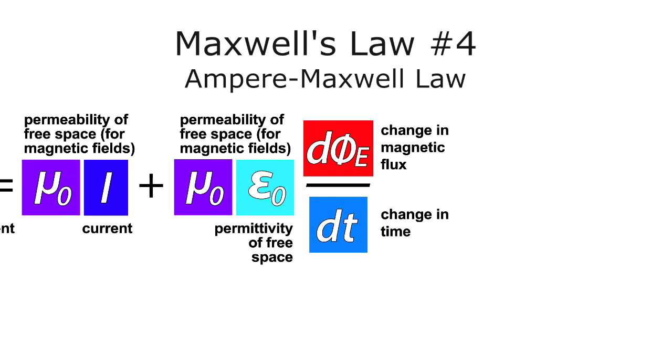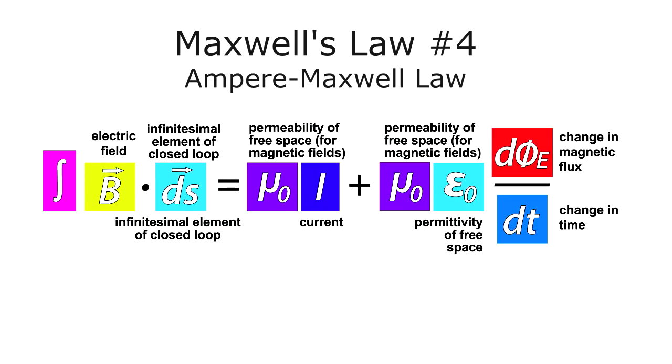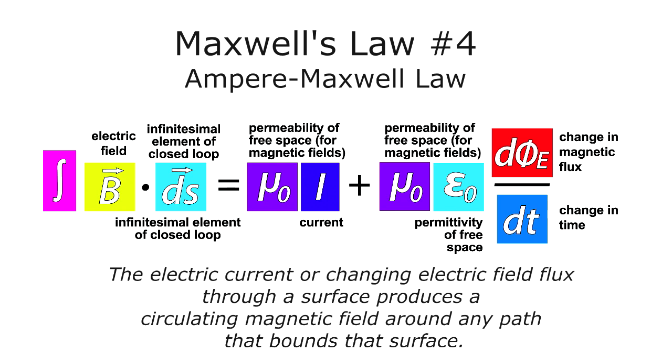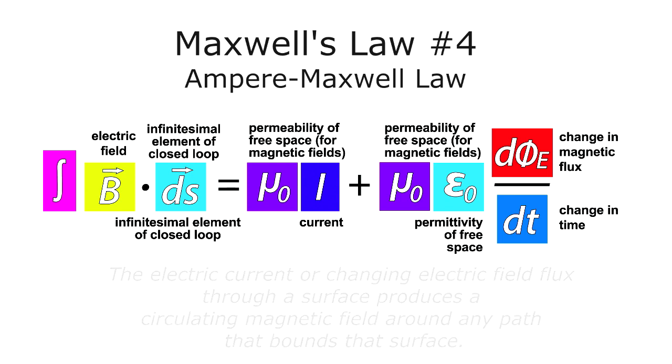More formally, the Ampere-Maxwell Law in its integral form states: The electric current or changing electric field flux through a surface produces a circulating magnetic field around any path that bounds that surface. This fourth and final equation is the one Maxwell made the most tweaks to in order to make it applicable to all electromagnetic phenomena.